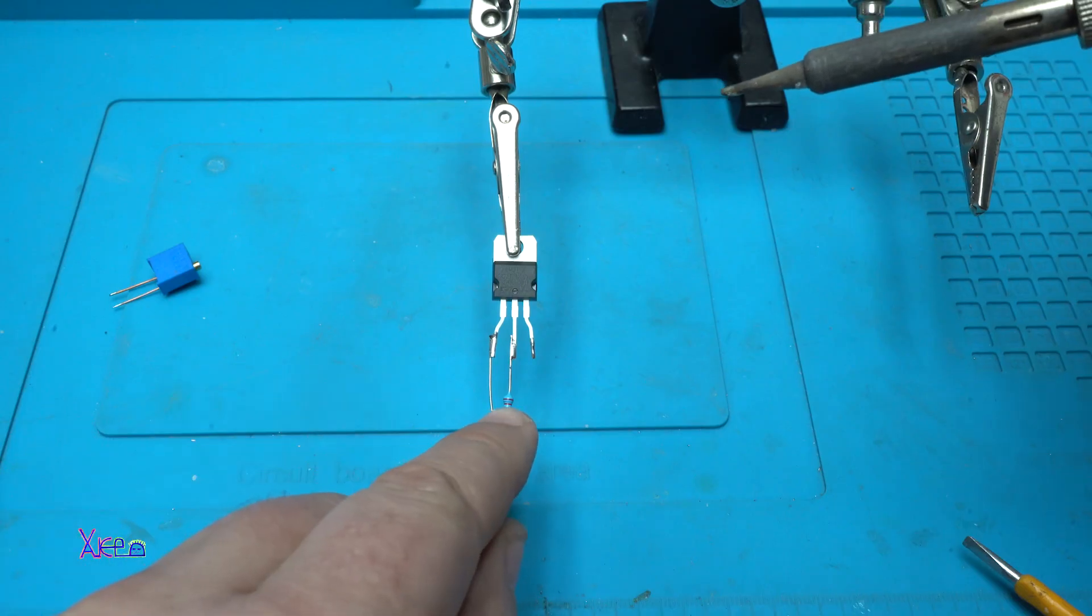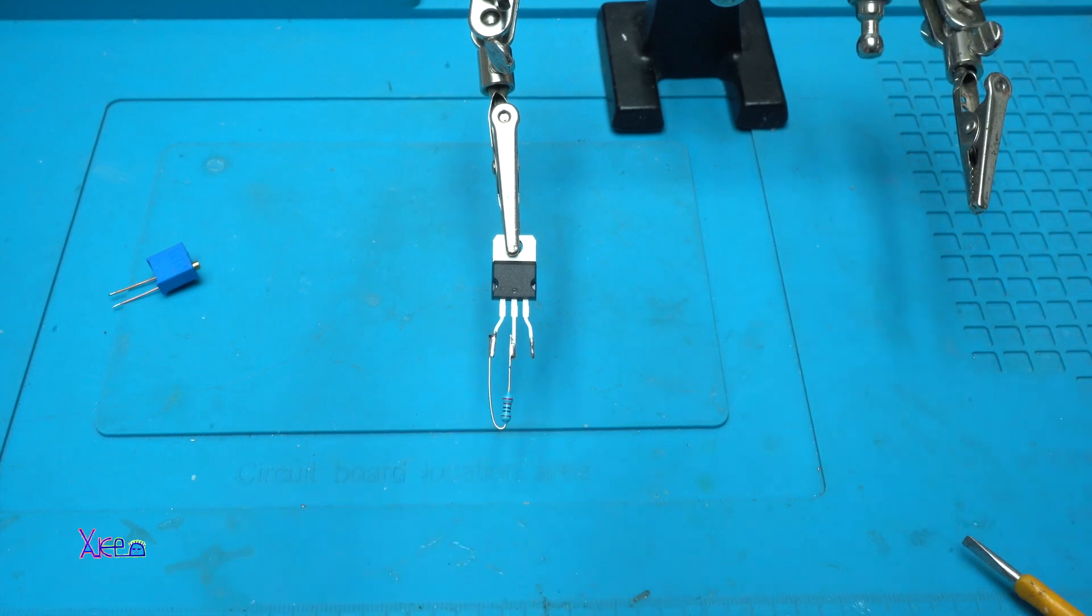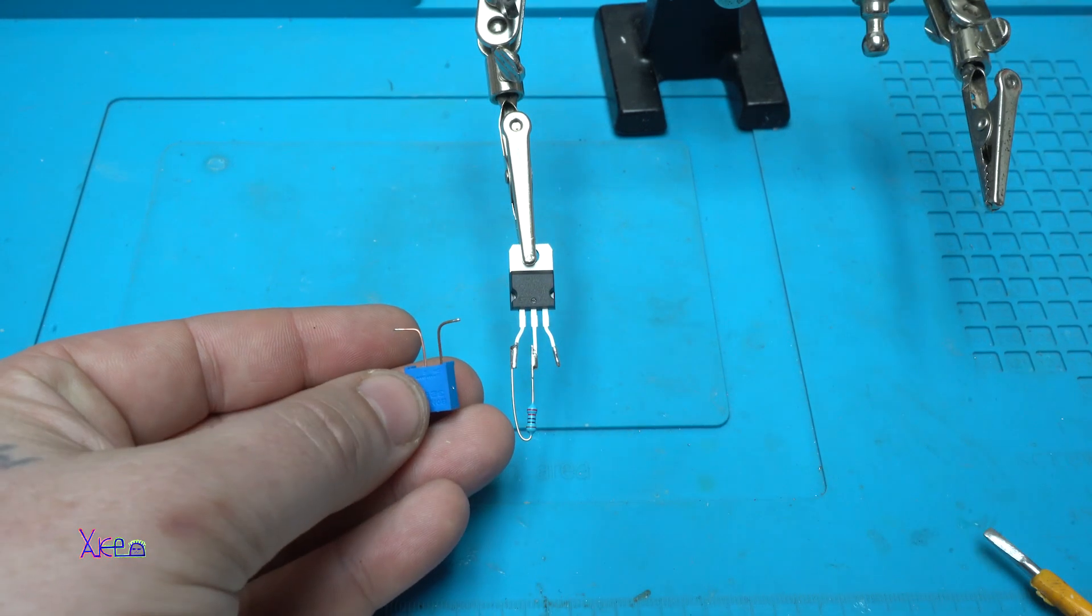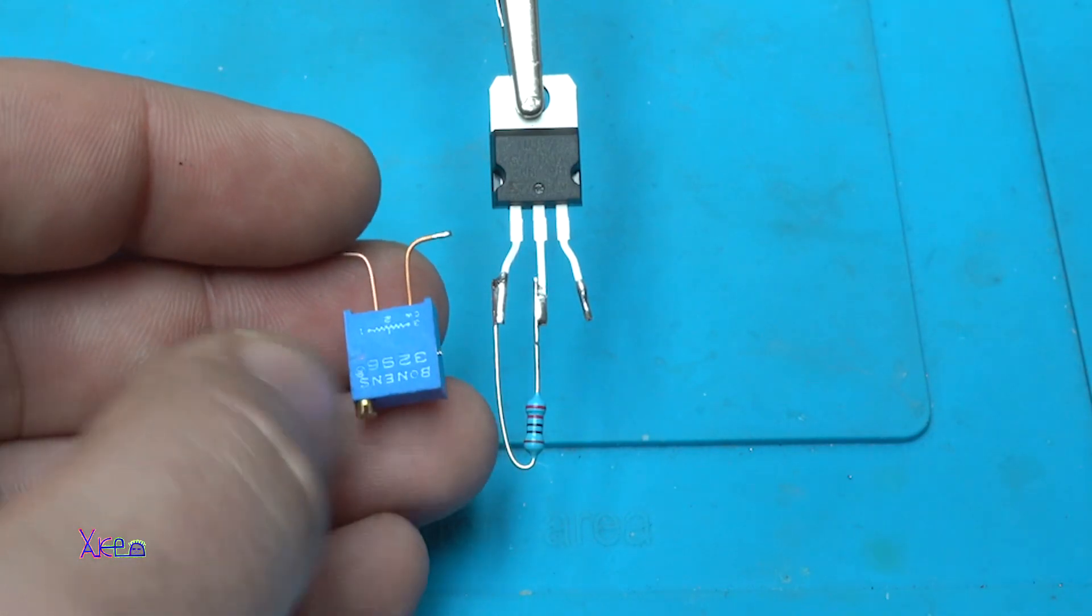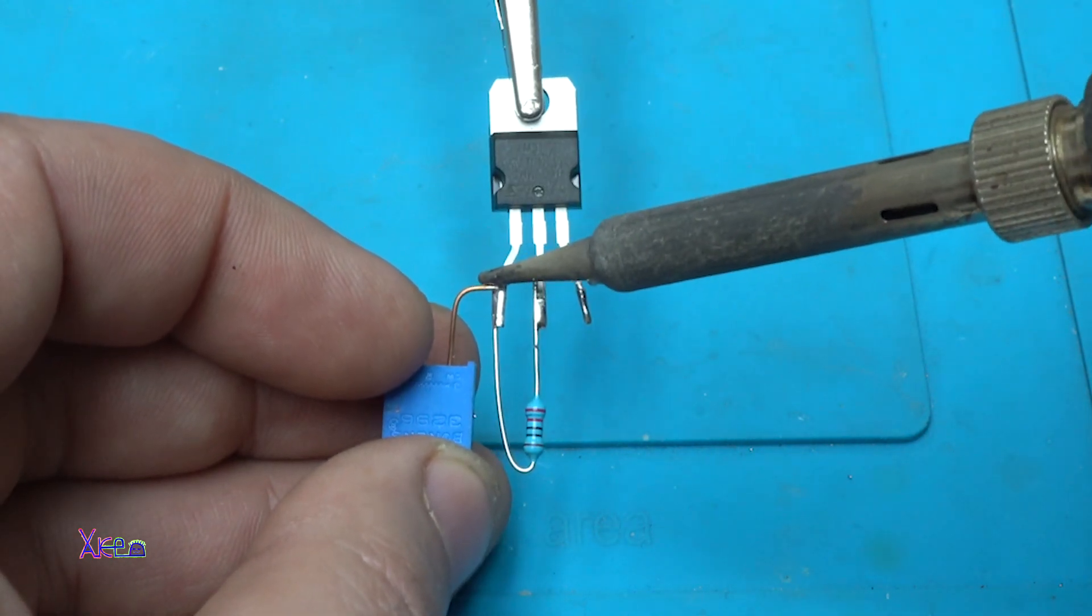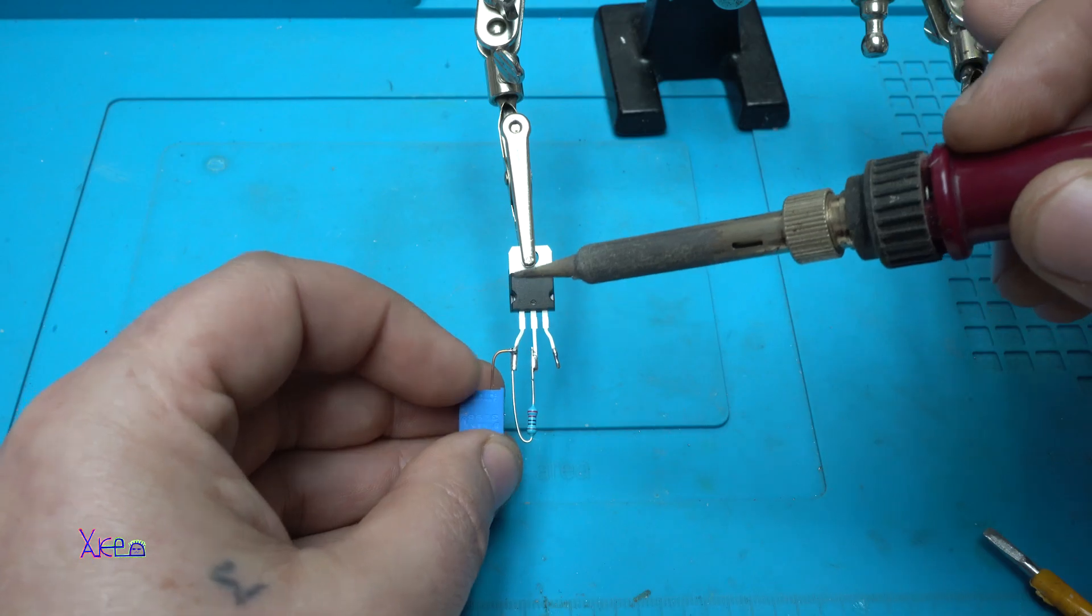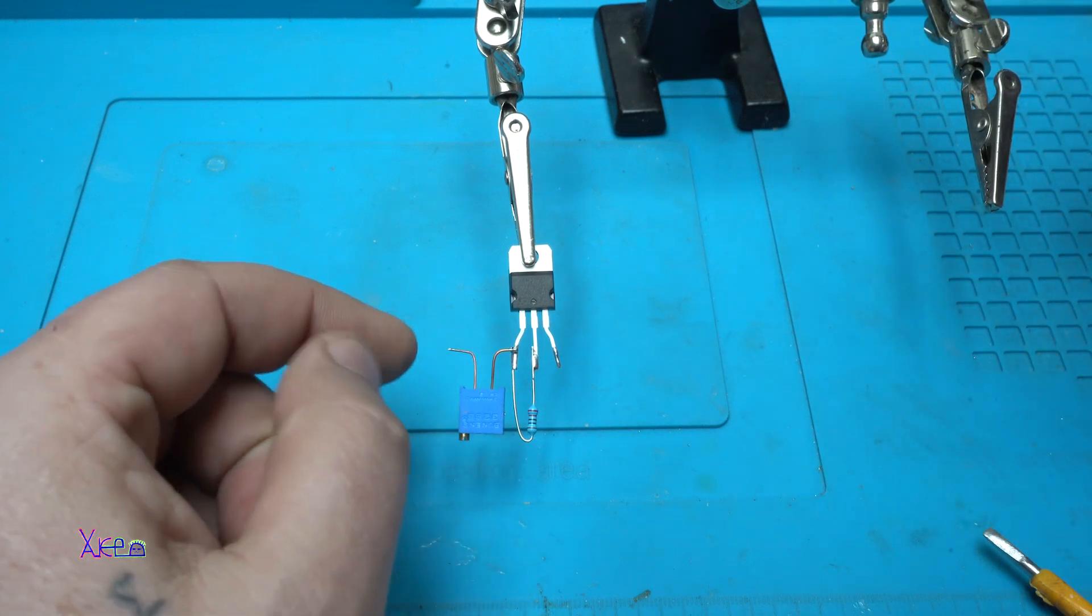Soldering a 220 ohms resistor between pin number 1 and pin number 2. Soldering the multi-turn potentiometer, which is an adjustable resistor, on pin number 1. The other wire will go to ground.